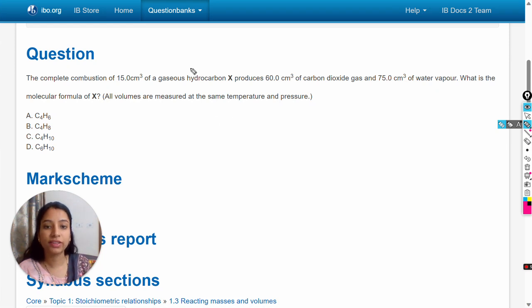Hello dear students, in this video we will solve this question: The complete combustion of 15 cm³ of gaseous hydrocarbon X produces 60 cm³ of carbon dioxide gas and 75 cm³ of water vapor. What is the molecular formula of X? All volumes are measured at the same temperature and pressure. So firstly we have to understand this question.